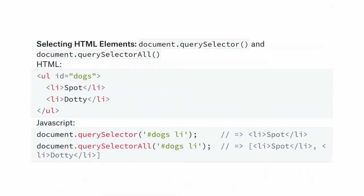For selecting HTML, since about six years ago, document.querySelector and document.querySelectorAll are available — so you can stop using jQuery just to select elements. This is available even in IE9. For example, given an ordered list with IDs 'spot' and 'dotty', document.querySelector('#dogs li') gives you just the first element it finds, while querySelectorAll returns a list of all matches as an array — in this case, spot and dotty.